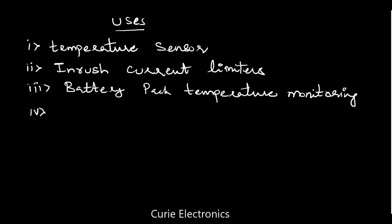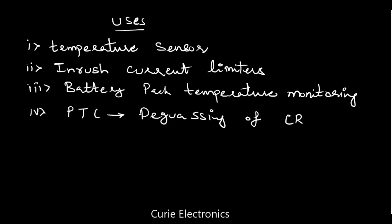One very good example of PTC, that is positive temperature coefficient, is the CRT TV. About ten years back we had CRT TVs, and for degaussing — that is, the degaussing coil — this PTC thermistor was used. Degaussing removes the earth magnetic field effect that creates picture distortion in the CRT. Thermistors can also be used as current protection devices. These are a few applications of the thermistor.